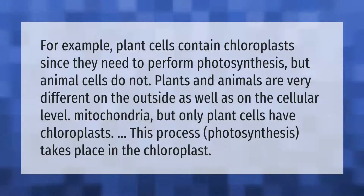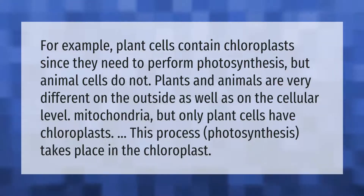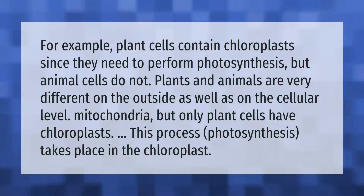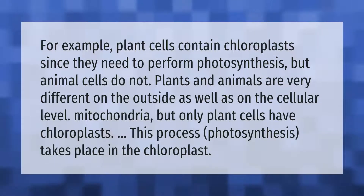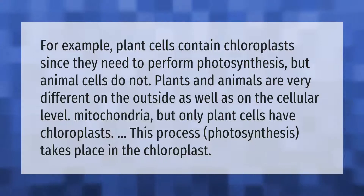Plant cells contain chloroplasts since they need to perform photosynthesis, but animal cells do not. Plants and animals are very different on the outside as well as on the cellular level. Both have mitochondria, but only plant cells have chloroplasts.